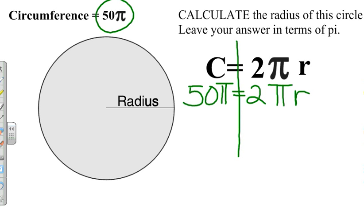2 pi r means 2 times pi times r. r is our only unknown, that means we need to get it by itself. r is multiplied by 2 pi.